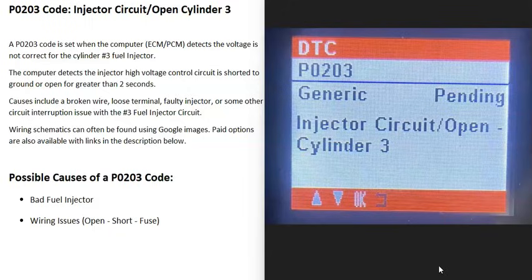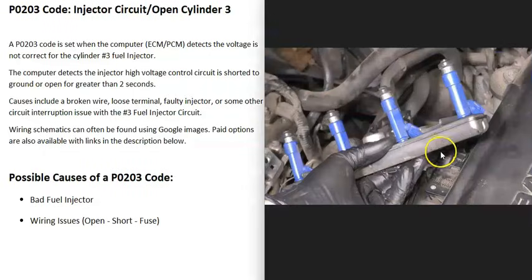Today I'm talking about a P0203 code, what it is and how you go about fixing it. A P0203 code is an injector circuit open cylinder 3.